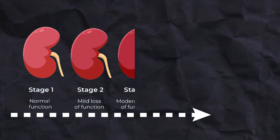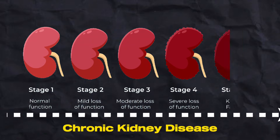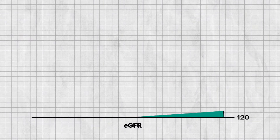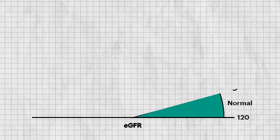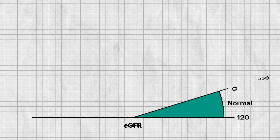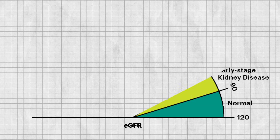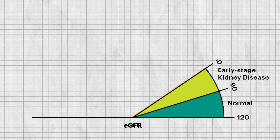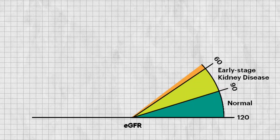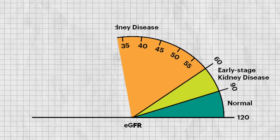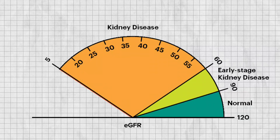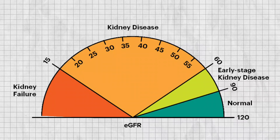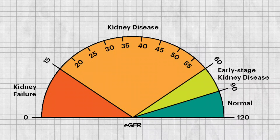eGFR stands for estimated glomerular filtration rate. It can help determine the stage of kidney disease and the risk of developing chronic kidney disease, known as CKD. The normal range of eGFR is between 90 to 120 mL/min. eGFR below 90 to 60 is considered early-stage kidney disease; below 60 is considered active kidney disease; and below 15 is an indication of kidney failure.